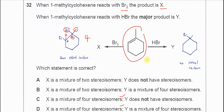Now let's look at when 1-methylcyclohexene reacts with HBr. We know that the hydrogen will add to this carbon because this carbon has more hydrogens — that's Markovnikov's rule. So hydrogen adds to that carbon and bromine adds to this carbon, forming this compound. This is the major product.